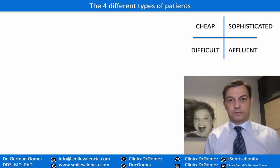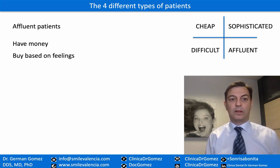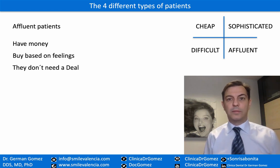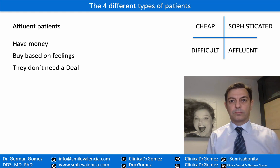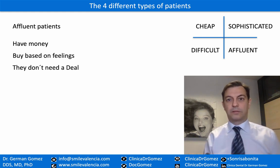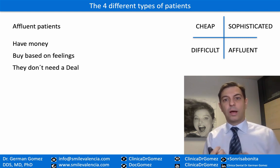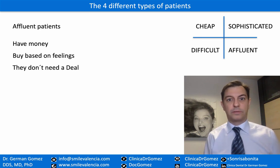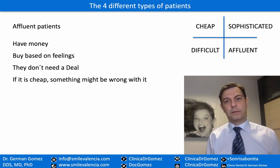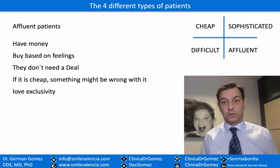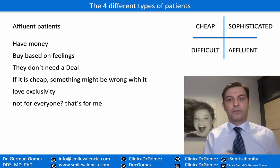The last type of patients are the affluent patients. Affluent patients also have money, and they buy based on feelings — they need to feel right. They don't need a deal; they don't ask for a 20% discount or two-for-one offers. What they want is other things. They want to feel good. They want their decision to feel good, so you have to do everything you can to make them feel good in your office, so that the decision they make there feels right. If something is cheap to them, something might be wrong with it. They love exclusivity — it's not for everyone, it's for me. That is the affluent patient.